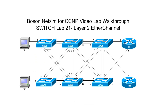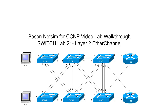Before we begin configuring the devices in our lab, let's take a moment to examine the network topology that we'll be working with. We can see that our network is a typical Layer 2 switch network arranged into layers. Going from left to right, we have an access layer that connects to end-station devices such as user workstations, IP phones, and such. This layer aggregates into the distribution layer right in the middle, which in turn aggregates into the core.